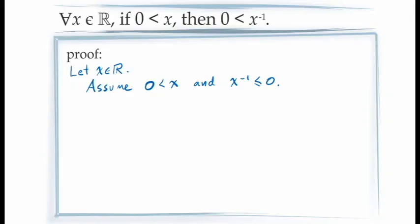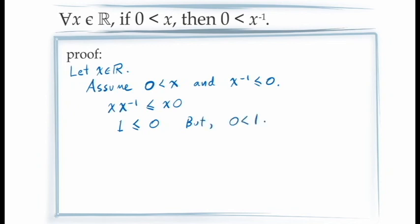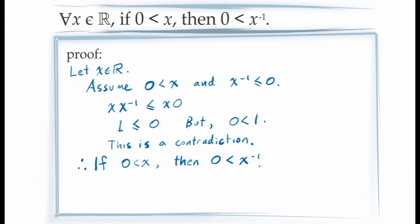Returning to the formal proof: with the assumption that x > 0 and x inverse ≤ 0, we multiply both sides of the inequality by x, giving x inverse times x ≤ 0 times x. By axiom M4, x inverse times x is 1, and by proposition 1, 0 times x is 0, yielding the inequality 1 ≤ 0. This contradicts what we already know — that 0 < 1. Since we've found a contradiction, we conclude our conditional statement is true: if x > 0, then x inverse > 0. Since x was arbitrary, this holds for all values of x.